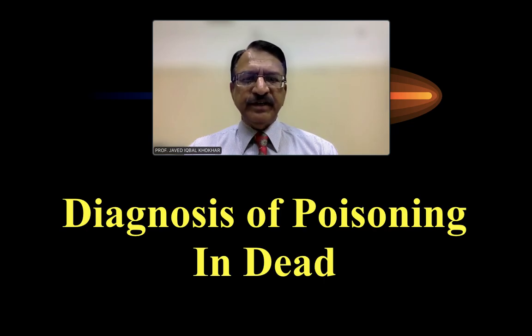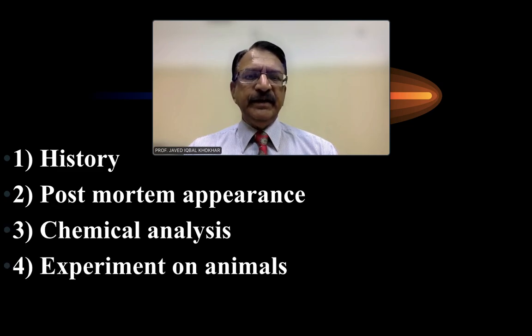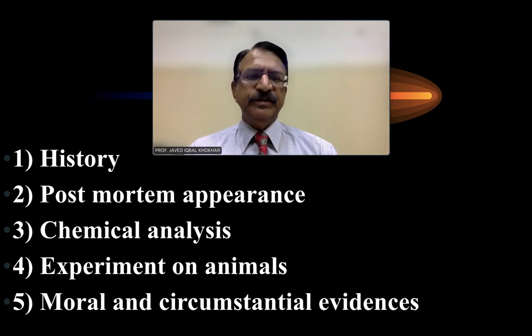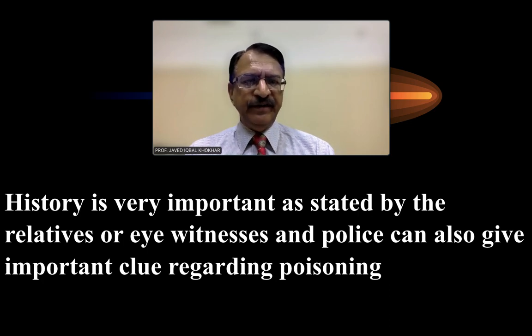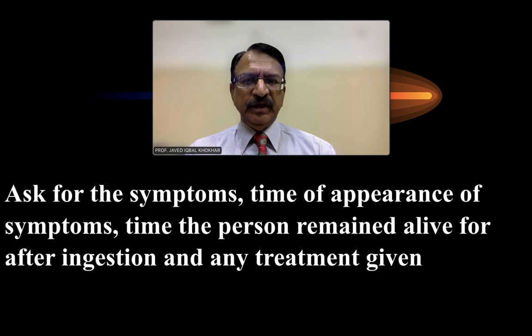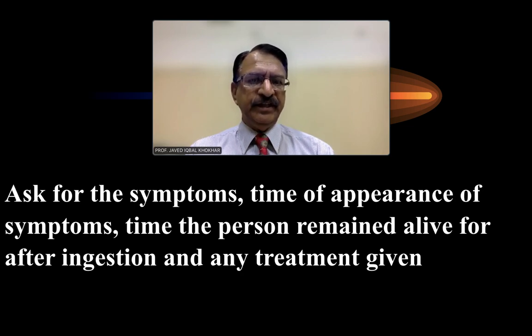Regarding diagnosis of poisoning in the dead, it involves gathering history, post-mortem appearance, chemical analysis, animal experimentation, and circumstantial evidence. For history, relatives, eyewitnesses, and police can provide clues. You must ask about the symptoms, the time of their appearance, how long the person remained alive, how much time elapsed after ingestion, and what treatment was given.